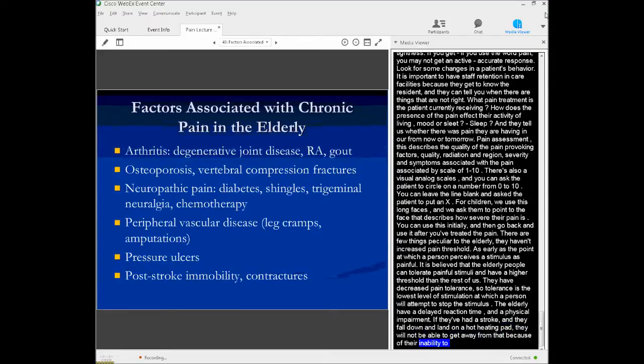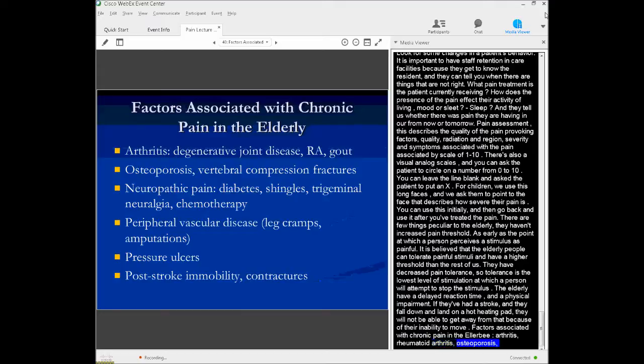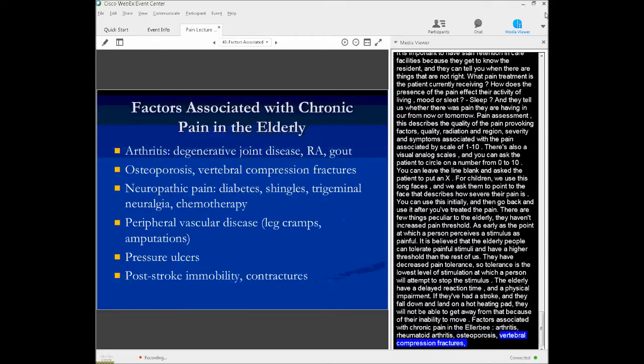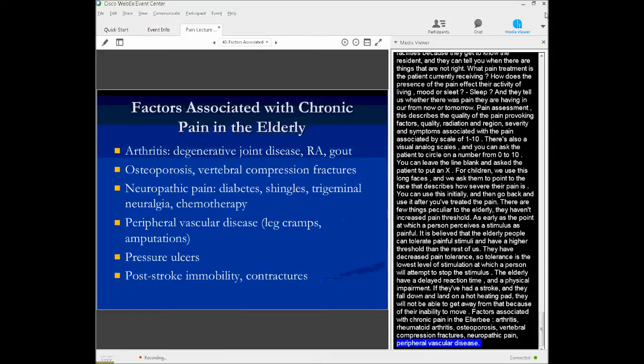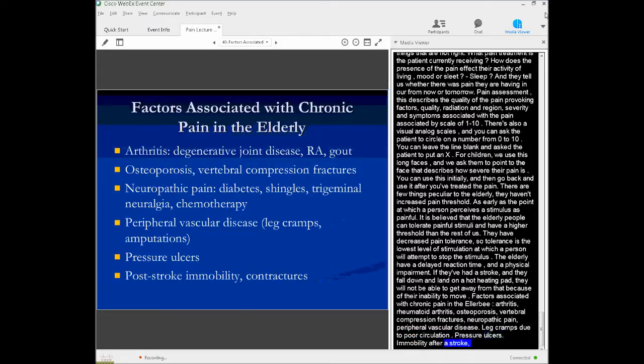Factors associated with chronic pain in the elderly, including osteoarthritis, rheumatoid arthritis, osteoporosis with compression fractures, neuropathic pain syndromes, including diabetic neuropathy, shingles, trigeminal neuralgia, side effects of chemotherapy, peripheral vascular disease, leg cramps due to poor circulation, extremity amputations, pressure ulcers, and immobility after a stroke, contractures from chronic neurologic disease.